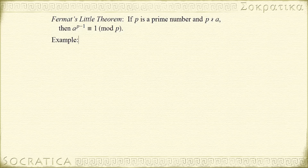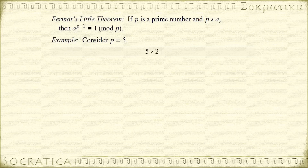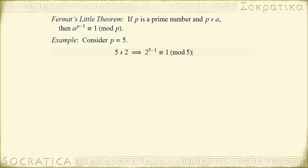Let's see some examples so you get a feel for what this theorem is actually saying. Consider the case where p equals 5 — 5 is prime. Then 5 doesn't divide 2, so 2 to the 5 minus 1 is congruent to 1 mod 5, or 2 to the 4th is congruent to 1 mod 5. So if you divide 2 to the 4th by 5, you'll get a remainder of 1.